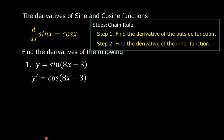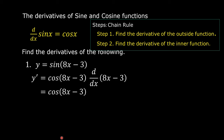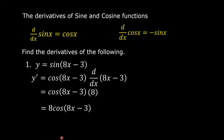So, the derivative of y is equal to cosine of 8x minus 3. Then find the derivative of the inner function. The inner function is 8x minus 3, so we multiply by the derivative of 8x minus 3 with respect to x. This is now equal to cosine of 8x minus 3 times 8, since 8 is the derivative of 8x minus 3. So this is equal to 8 cosine of 8x minus 3.